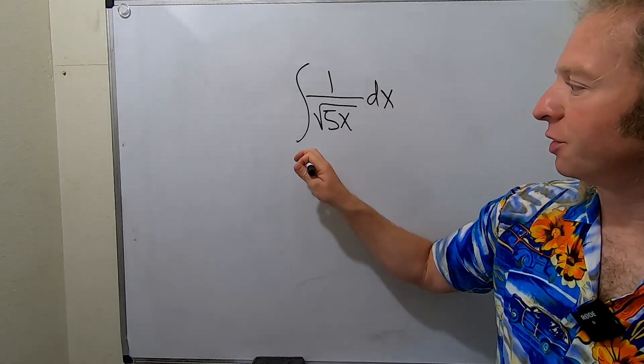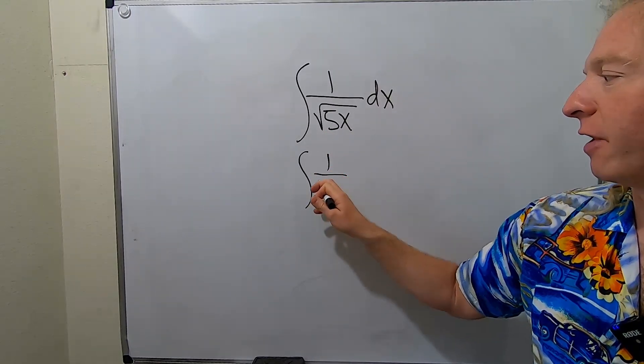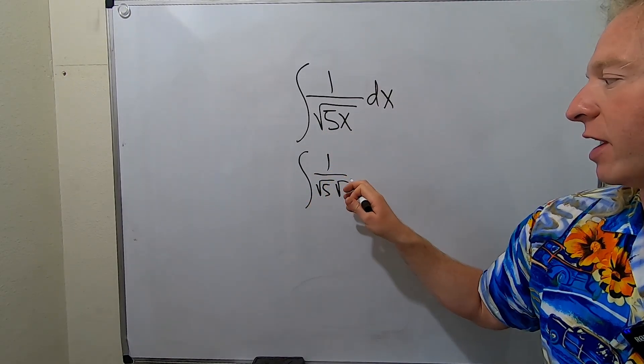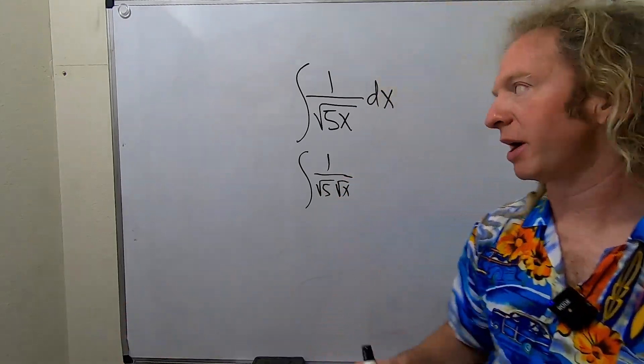So first thing you can do here is you can rewrite this. When you have the square root of 5x, you can write that as square root of 5 times square root of x. So you can do that, right? Because these are both positive so you can combine them. It's a rule.